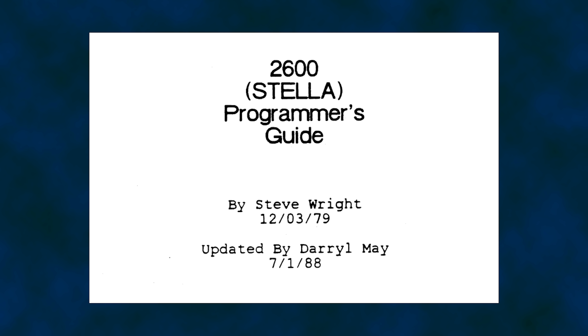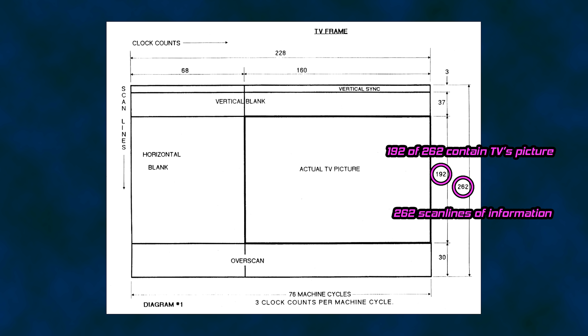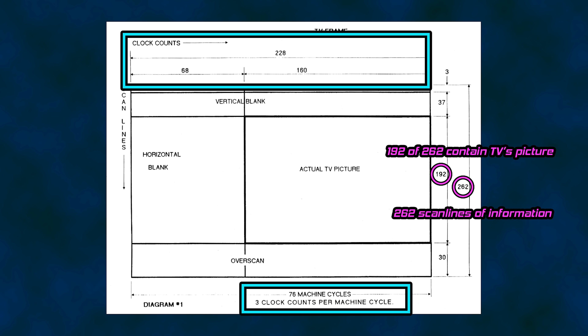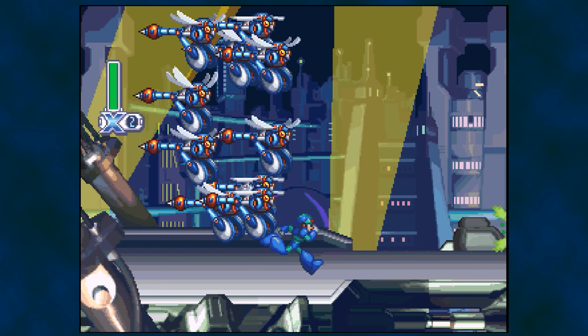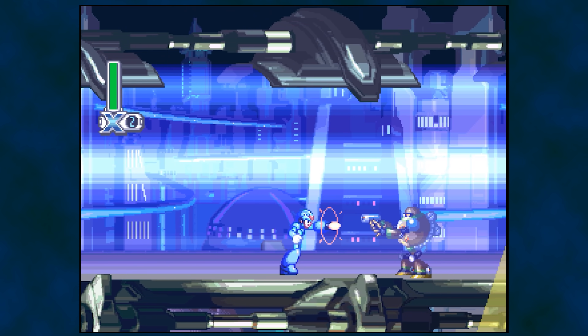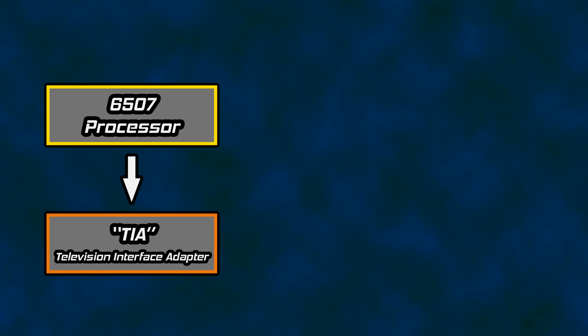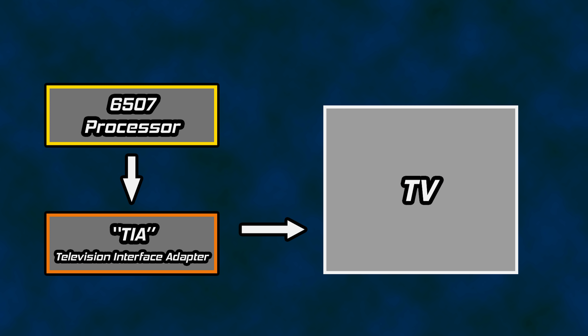A document called the Stella Programmer's Guide, written by Steve Wright in 1979, explains how to program for the Atari 2600. It provides a basic diagram for how 262 scan lines are used, including 192 for picture information. The timing of the Atari's machine cycles and clock counts is laid out relative to the scan lines sent to the television. While many consoles that followed the Atari 2600 used things like VRAM and frame buffers to handle graphics on a per-frame basis, the Atari's graphics are handled on a per-line basis. The Atari's processor must send the data for the line to be drawn to the Television Interface Adapter, or TIA chip, which converts the data into a video signal. There is no video RAM.